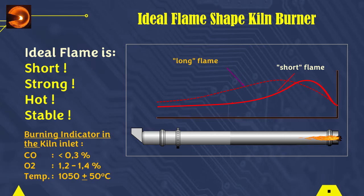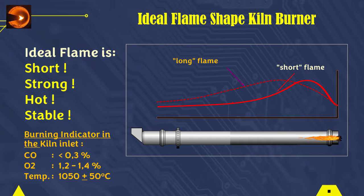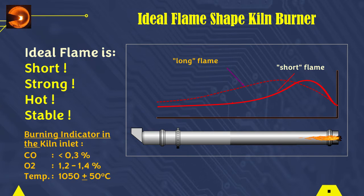Parameters of the fuel combustion process in the kiln can be seen on the combustion indicator at the kiln inlet. For example, CO is below 0.3%, O2 is between 1.0% and 1.4%, and temperatures are between 1,000 and 1,100 degrees Celsius.